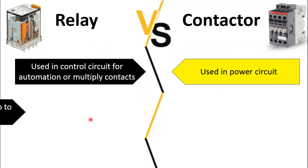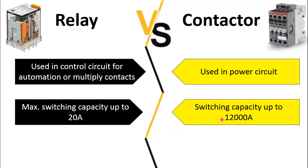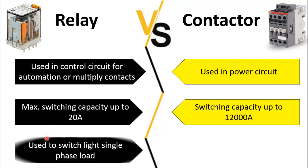Another difference is the maximum switching capacity of a relay is up to 20 ampere. This type of relay, which has a high current rating, is called the power relay, but most relays are used only to energize the coil of a contactor. Whereas for the contactor, the switching capacity is up to 12,000 ampere because it is used to switch heavy loads.